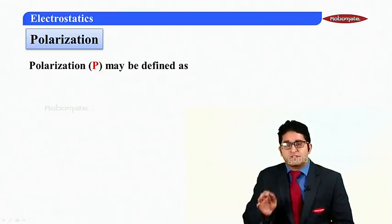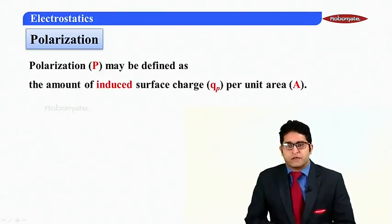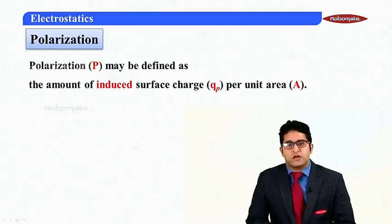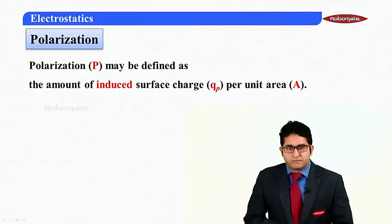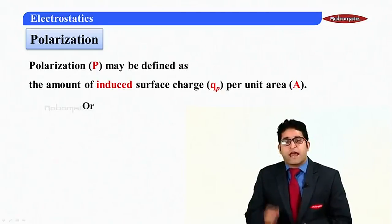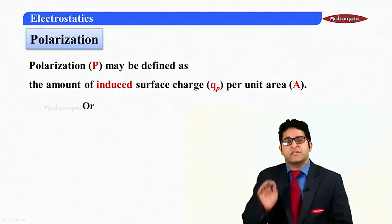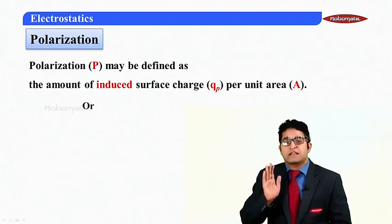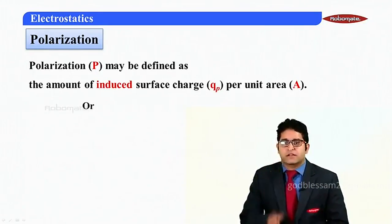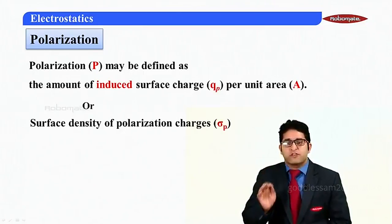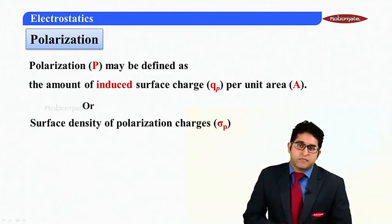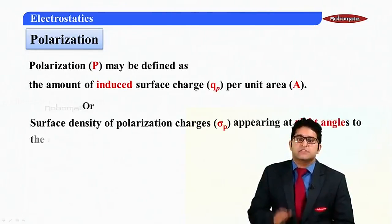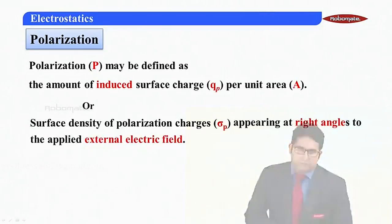Now let us define the word polarization. Polarization can be defined as polarization charges per unit area, or the amount of induced surface charge Qp per unit area. It can also be defined as the surface density of polarization charges, sigma p, which are appearing at right angles to the external electric field.